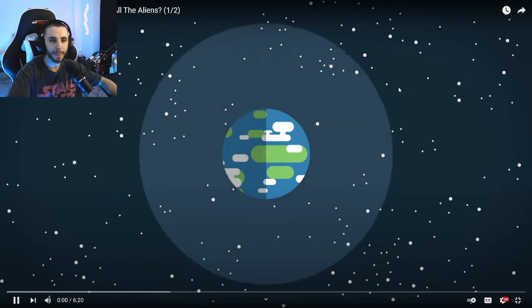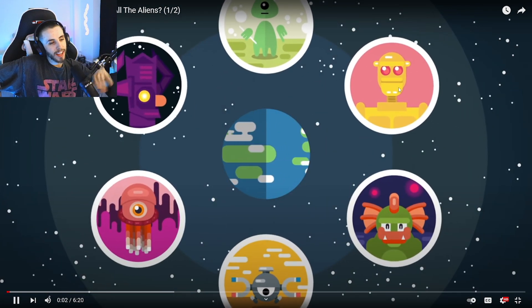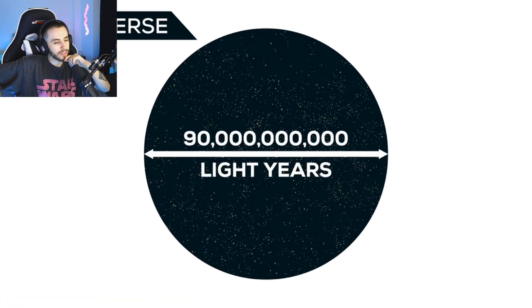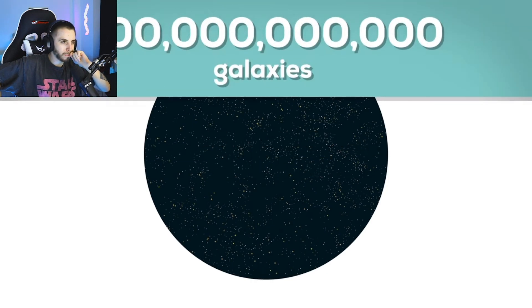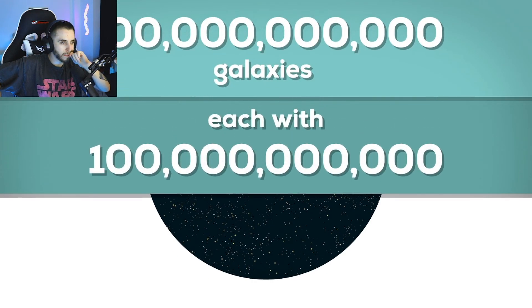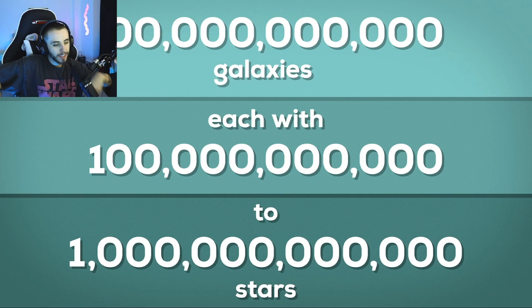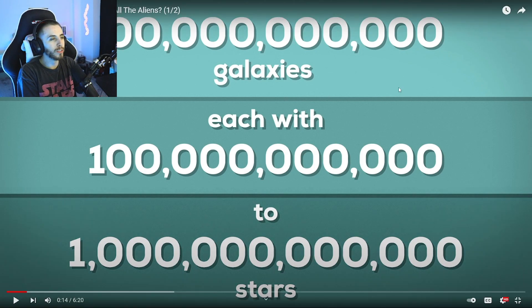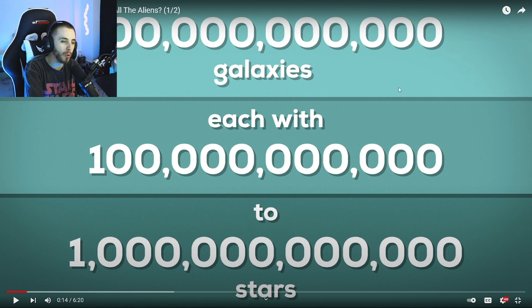Are we the only living things in the entire universe? The observable universe is about 90 billion light years in diameter. There are at least 100 billion galaxies, each with 100 to 1000 billion stars. That alone, it's literally impossible that we are the only living things in the universe. There's no way. Like, bro, 100 billion galaxies, not planets, galaxies. There's no way.